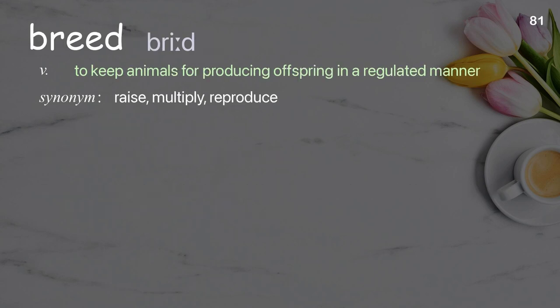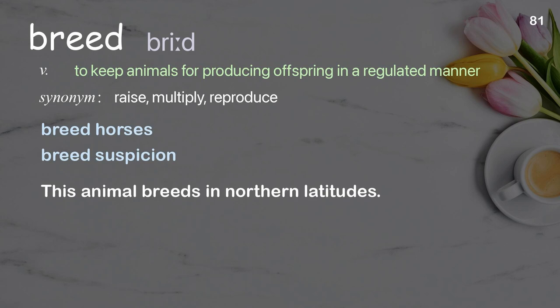Breed: To keep animals for producing offspring in a regulated manner. Examples: Breed horses, breed suspicion. This animal breeds in northern latitudes.